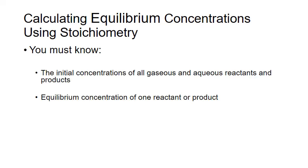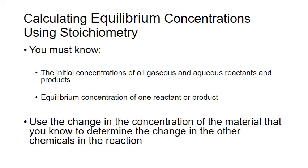You need two things. You have to know the initial concentrations of all the gaseous and aqueous reactants and products — everything that's incorporated into the equilibrium expression. You also need to know one equilibrium concentration. It can be for a reactant or for a product, but you have to know one of those equilibrium concentrations.